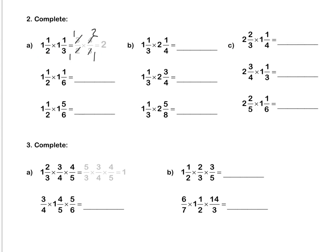Let's do c together. 2 times 3 is 6 plus 2, so we have 8 thirds. Times 1 and 1 quarter, which is 5 quarters as an improper fraction. Then we simplify in our question: we can divide 8 by 4, which is 2, and 4 divided by 4 is 1. We multiply out: 2 times 5 is 10, 3 times 1 is 3. Our answer is an improper fraction, so we rewrite it as 3 wholes and 1 third as a mixed number. Press pause to complete question 2.